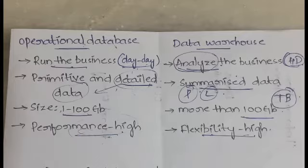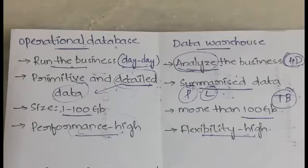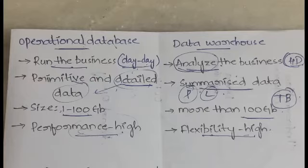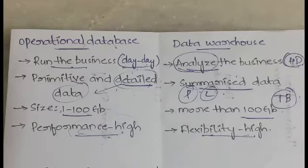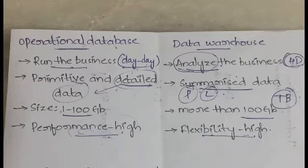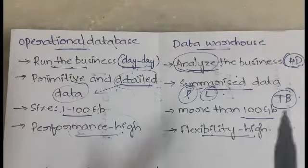To summarize: operational database is OLTP and data warehouse is OLAP. Operational database does day-to-day processing, is used by database administrators, focuses on information in, is based on the ER model, provides a detailed and flat relational view, accesses data in tens of units, is used to run the business, contains detailed data, has high performance, and has a size of 1 to 100 GB. Data warehouse has more than 100 GB storage.